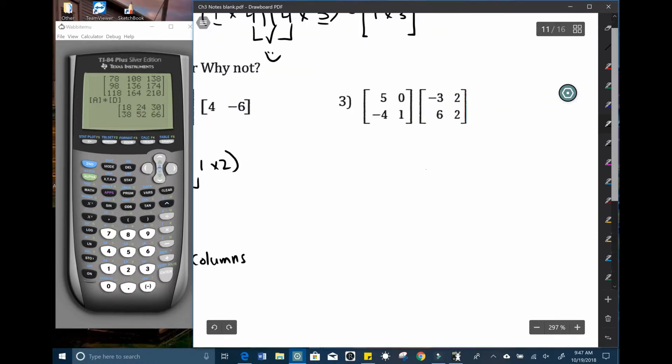And lastly, a two by two times a two by two. Pretty nice with square matrices. You can always do square matrices times one another. Yes. And you'll get a two by two. Pretty easy stuff.